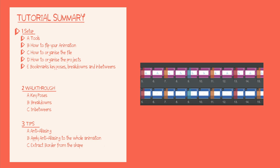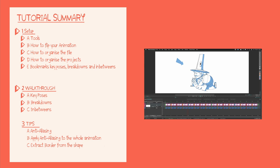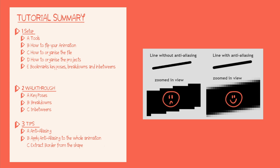Then I will walk through how to create the key poses for the shadows, how to continue with the breakdowns, and how to create the final in-betweens. I will only cover the important elements. We'll finish with useful tips — how to remove aliasing from your animation, and how to extract just the border line from the shape, which you may need for specific productions.